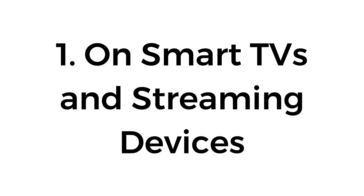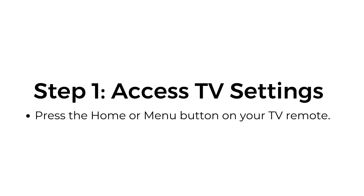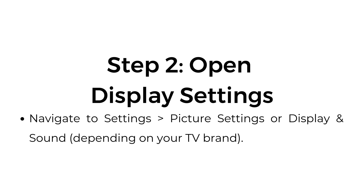On smart TVs and streaming devices. Step 1: Access TV settings. Press the home or menu button on your TV remote. Step 2: Open display settings. Navigate to Settings, then Picture Settings or Display and Sound, depending on your TV brand.